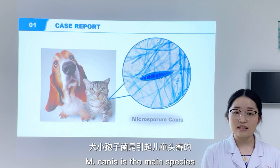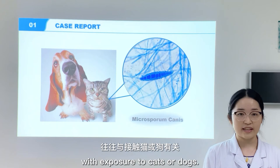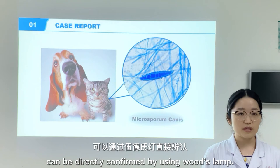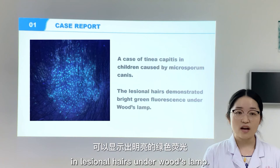In most areas of China, M. canis is the main species that causes tinea capitis in children, which is always associated with exposure to cats or dogs. Tinea capitis infected by M. canis can be directly confirmed by using Wood's lamp. The species demonstrates bright green fluorescence in lesional hairs under Wood's lamp.